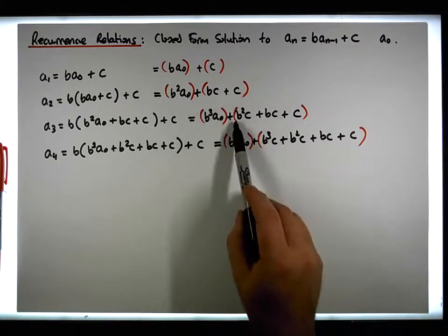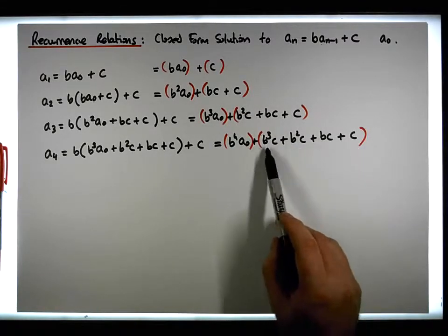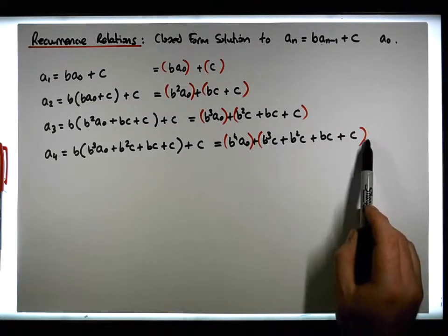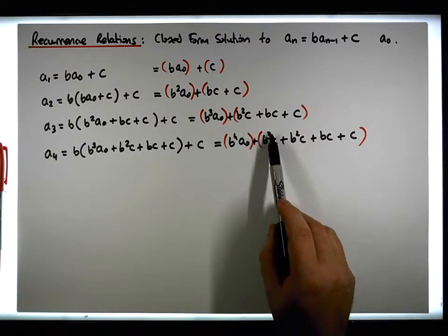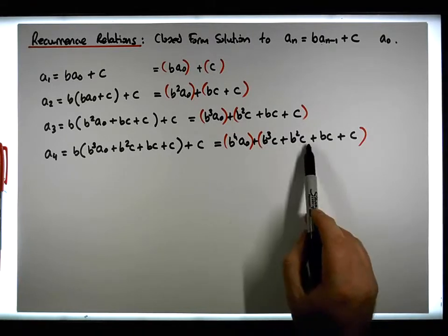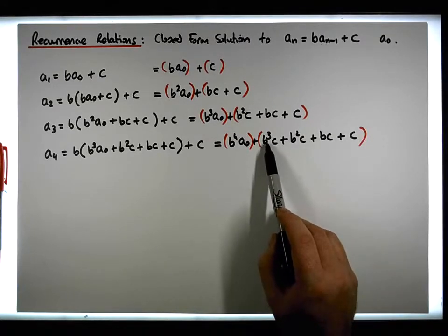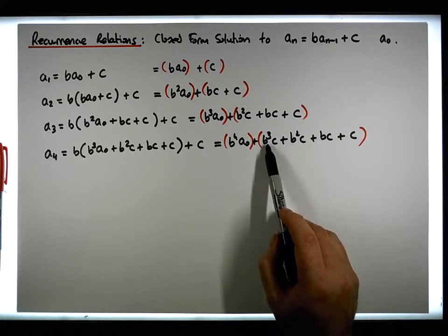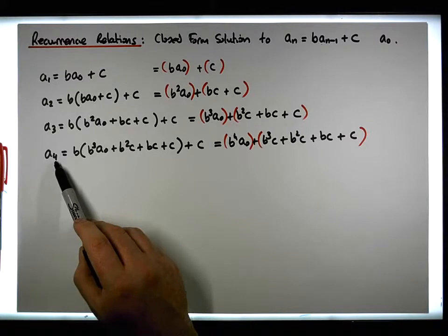You can see that we actually have a polynomial here. The indeterminate is b — c is just a constant — and you can see that the highest power, the degree of the polynomial, is 1 minus the index of the term that we're looking for.